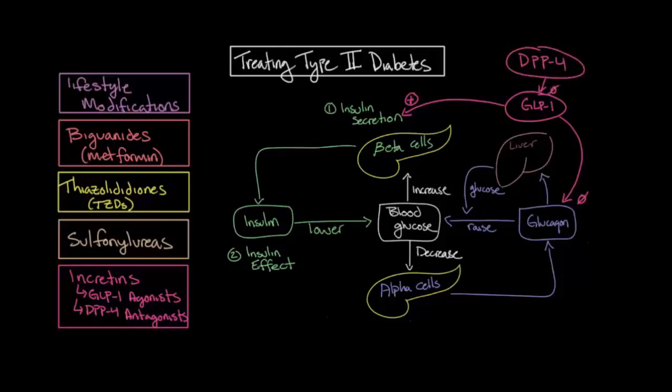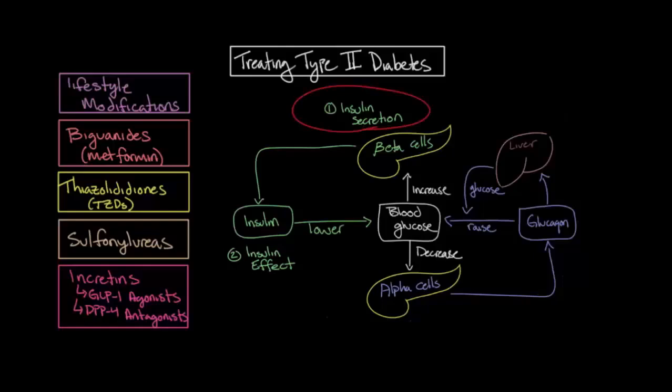Therefore, GLP-1 agonists can be given to directly stimulate this incretin pathway to augment the insulin pathway and treat type 2 diabetes. Similarly, DPP-4 inhibitors can be given to indirectly augment the insulin pathway by inhibiting the inhibition of the incretin pathway. It's important to note that any of the treatments for type 2 diabetes that act upon this first step in the insulin pathway, and therefore increase insulin secretion, will also carry a risk of inducing hypoglycemia, or low blood sugar levels. The treatments that act upon this step and carry this risk include lifestyle modifications, sulfonylureas, and the incretins. One way to decrease this risk is to take the medications with a meal.